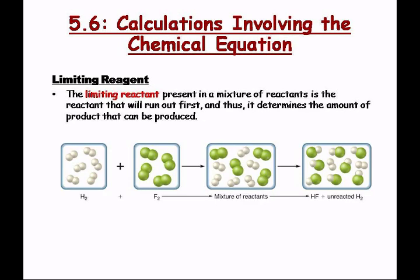Recall we were talking about limiting reagent. It's the thing that gets used up fastest. So you can see here it's going to be a one-to-one mixture of hydrogen to fluorine. That's what the reaction says — one mole to one mole to make HF, one mole. So let's just write that down to make sure we know what we're talking about.